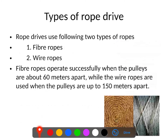Looking at rope drives, there are two types depending on what type of ropes are used. One is called a fiber rope drive and another is called a wire rope drive. Fiber rope drives are made of fibrous material, while wire rope drives are made of metal. Fiber rope drives can be successfully used when the distance between the two pulleys is up to 60 meters, while wire rope drives can be advantageously used for distances up to 150 meters between the two pulleys.